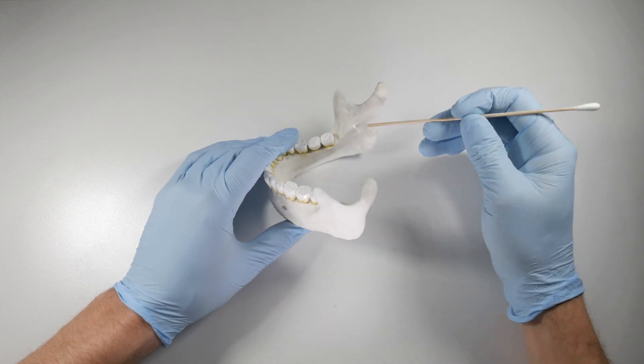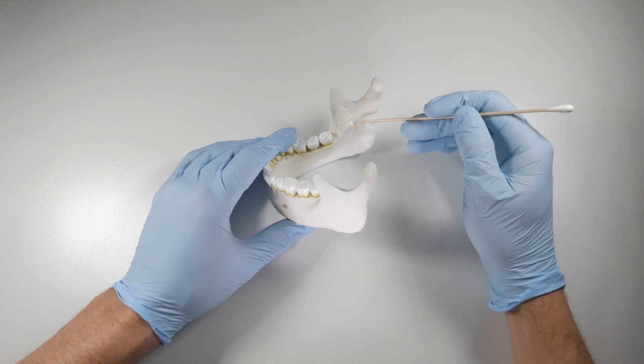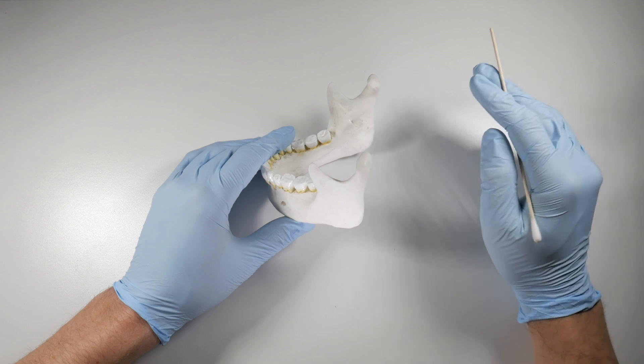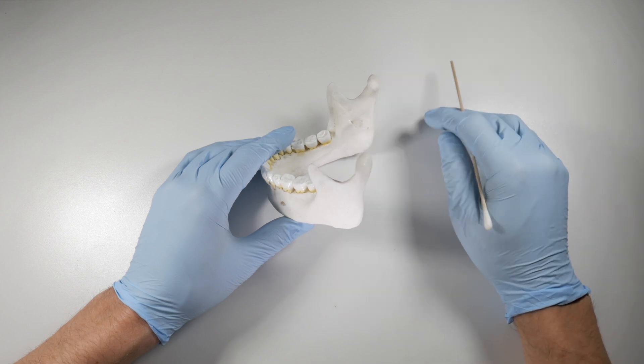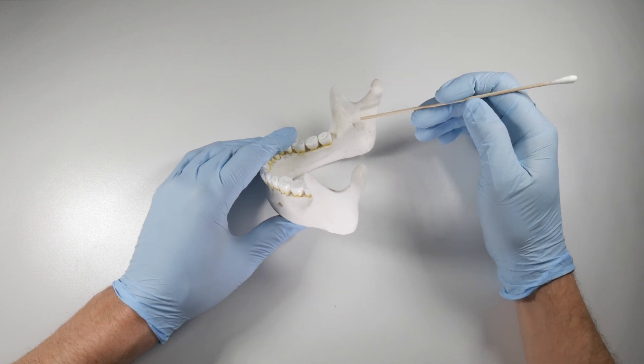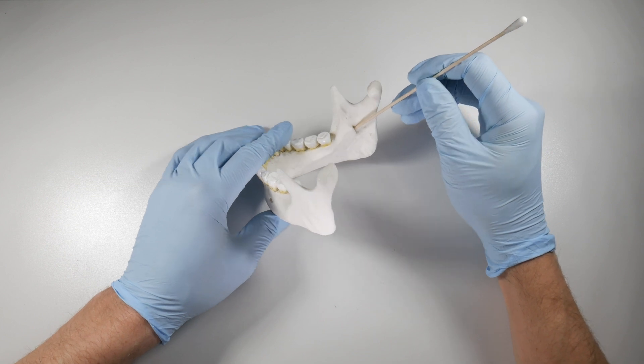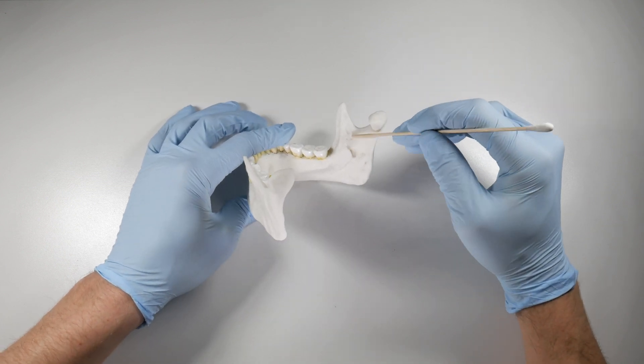The inferior alveolar nerve is a branch of the third division of the trigeminal nerve. It is also referred to as the V3 branch or the mandibular nerve. The nerve itself enters the mandibular foramen, which is located on the medial aspect of the ramus.